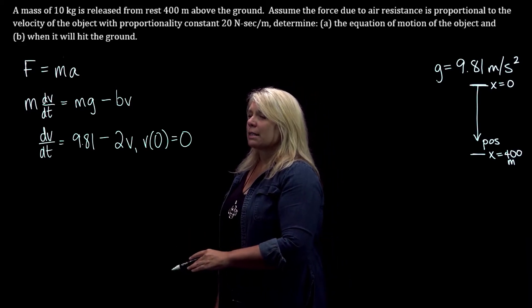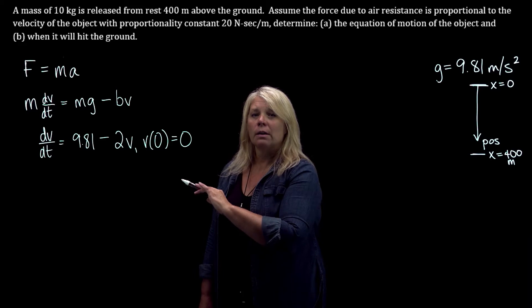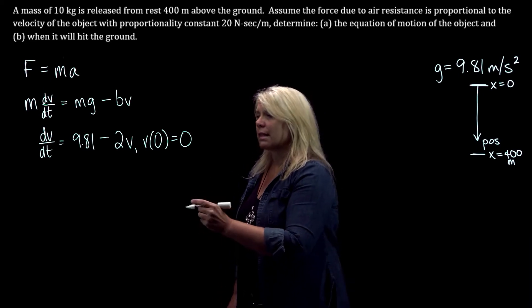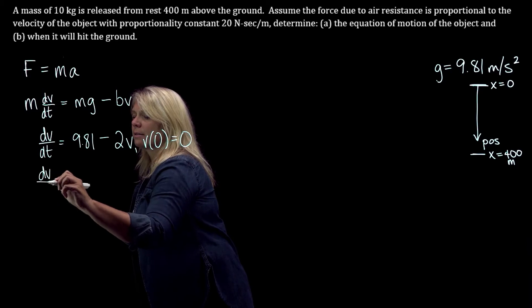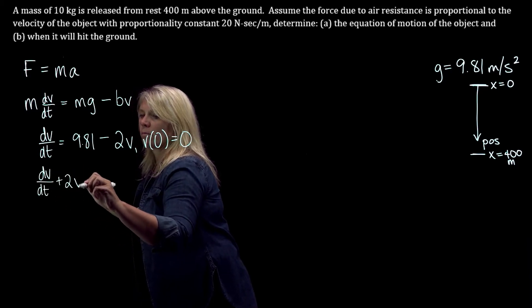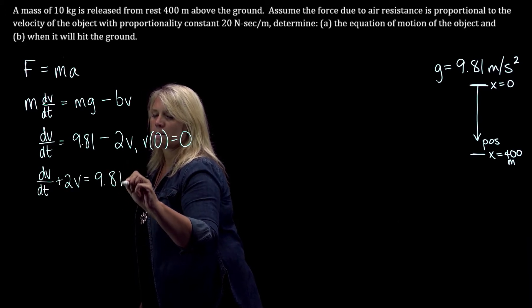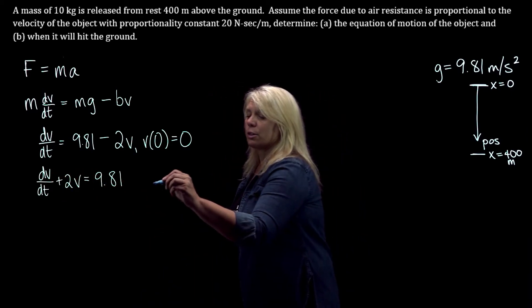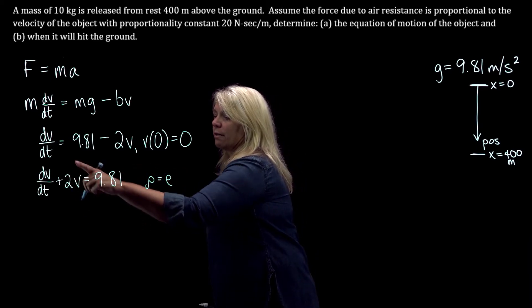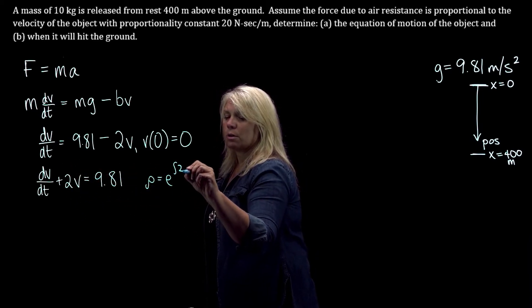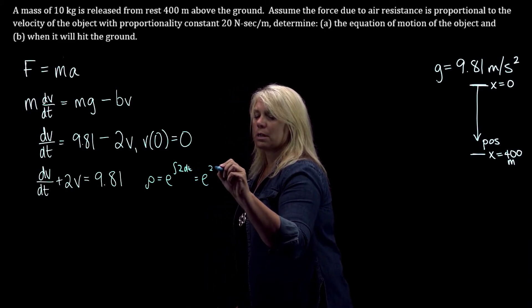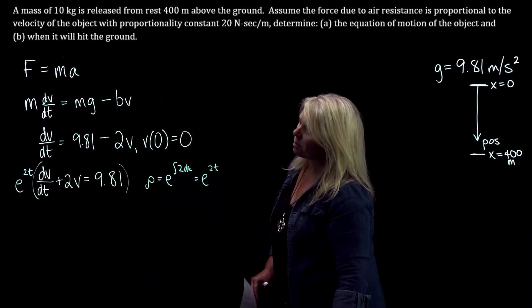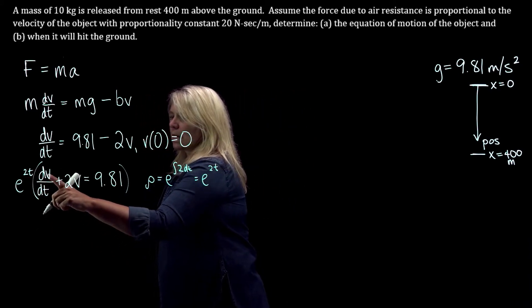This differential equation is linear and it is also separable, so you can choose to solve it either way. I'm going to treat this as a linear differential equation and solve it that way. I'll add the 2v term to both sides. Then I need to find my integrating factor. Our book likes to use rho for that — e to the integral of the coefficient function, so 2 dt, which gives e to the 2t. I'm going to multiply through by e to the 2t to put it in the form where we're ready to solve.